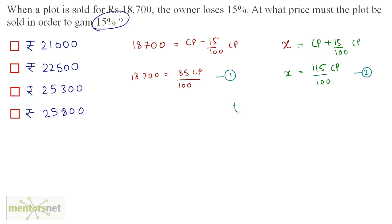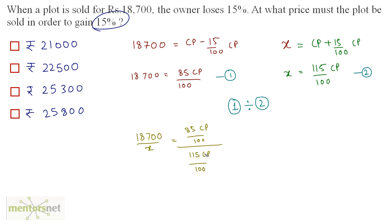We now have equation 1 and equation 2. Dividing equation 1 by equation 2: 18,700/X equals (85CP/100) divided by (115CP/100). The cost prices and hundreds cancel out, giving 18,700/X equals 85/115.